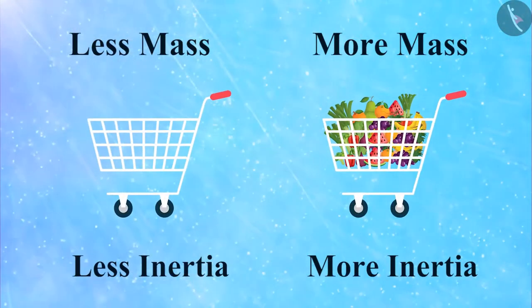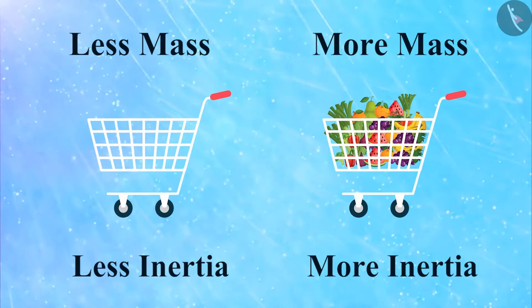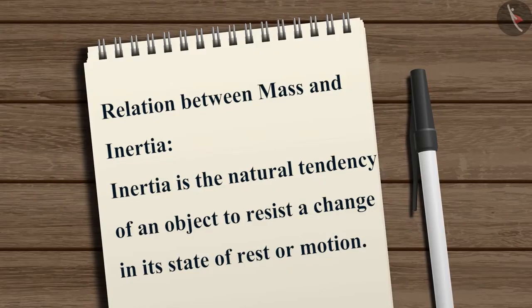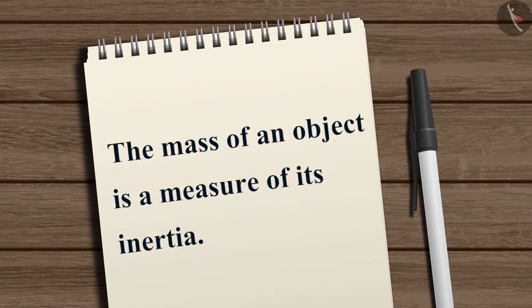Accordingly, we can say objects with more mass have more inertia. Thus, the relation between mass and inertia can be stated as follows: Inertia is the natural tendency of an object to resist a change in its state of rest or motion, and the mass of an object is a measure of its inertia.